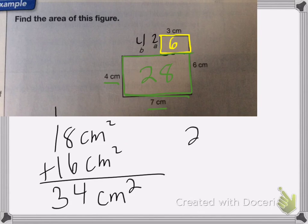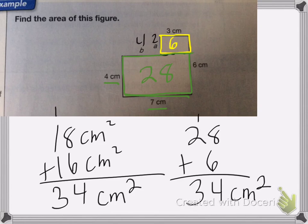I'm going to add those together now. 28 plus 6. 8 plus 6 is 14, carry my 1. 2 plus 1 is 3. So I end up with 34 centimeters squared. It's the correct either way I do it.